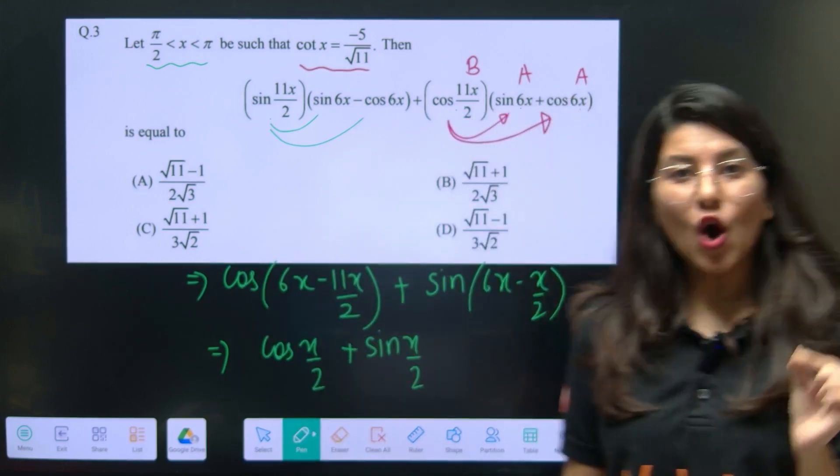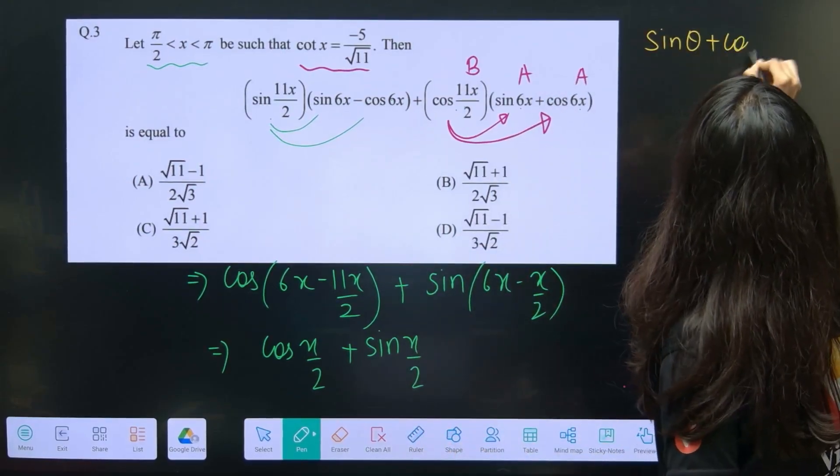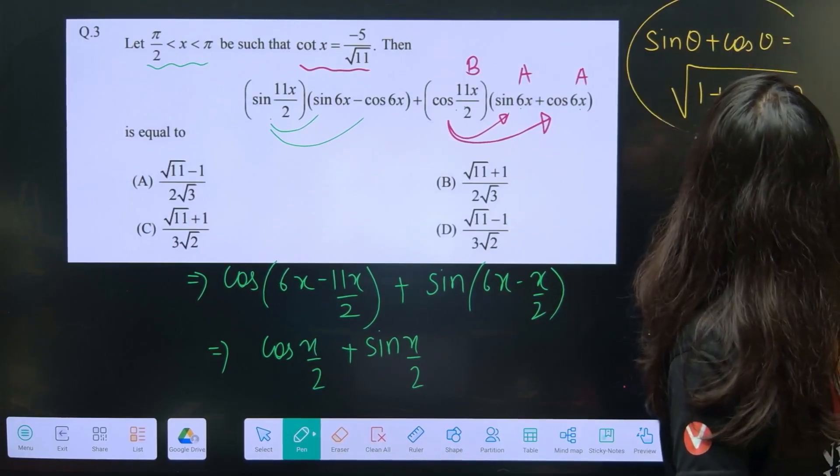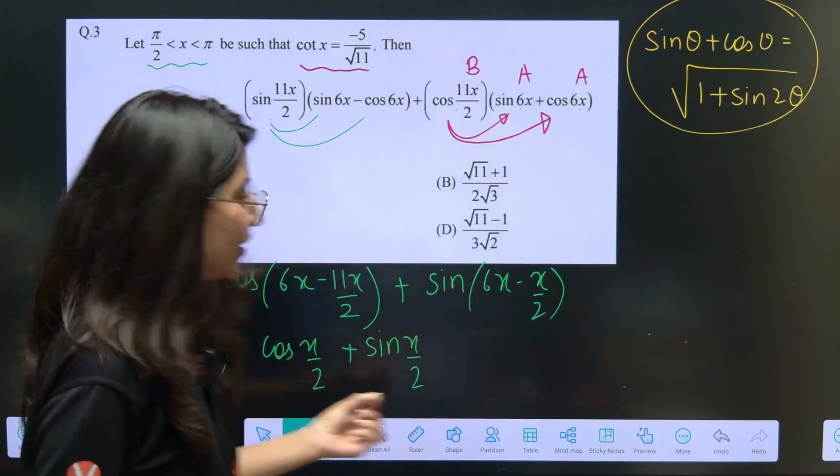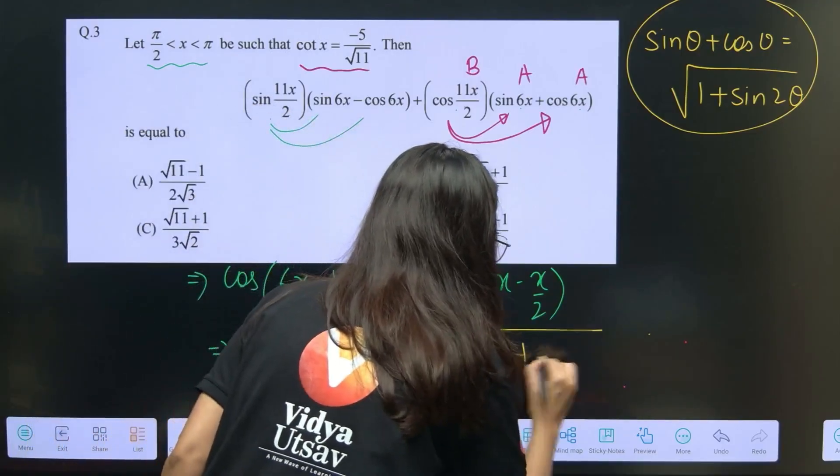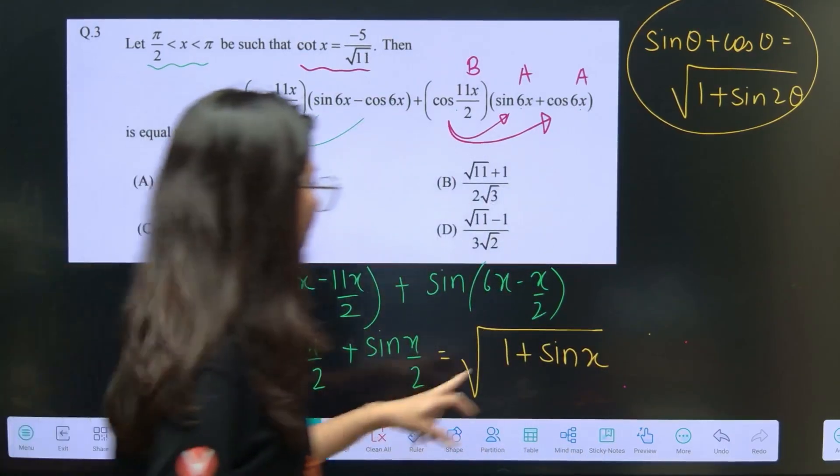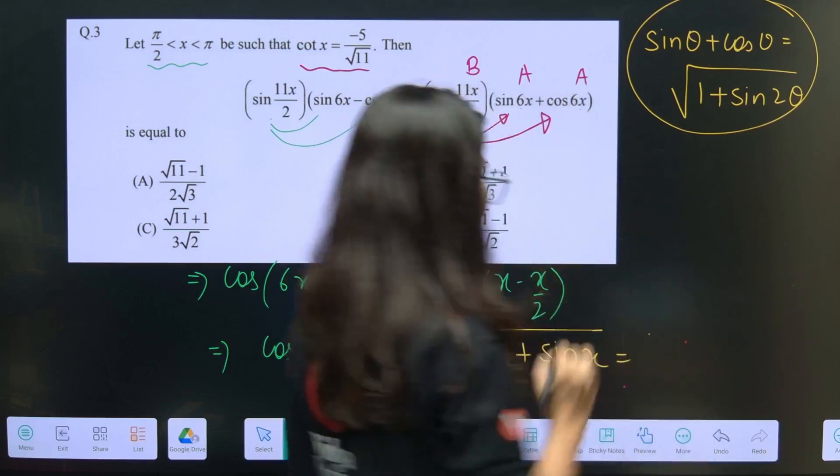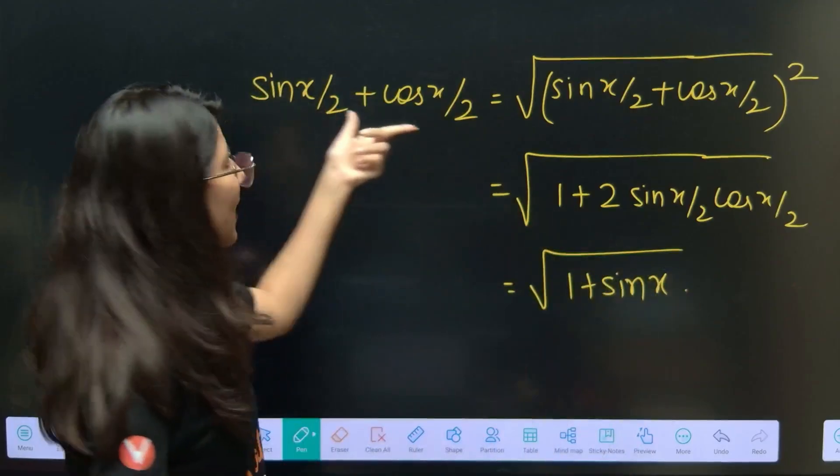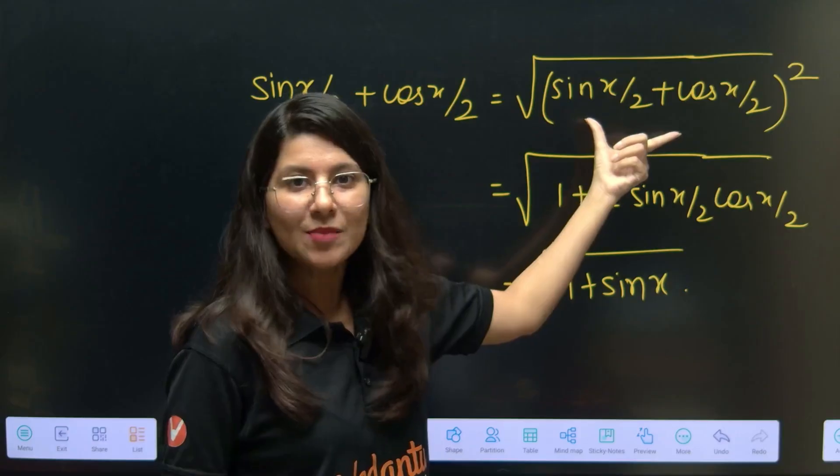I don't know how many of you know it but cos theta plus sin theta, this is the formula, sin theta plus cos theta is nothing but square root 1 plus sin 2 theta. How many of you know it already? This is the formula which we are going to use over here. So this is cos x by 2 plus sin x by 2 is nothing but square root of 1 plus sin x, double angle x by 2 double is 1 plus sin x.